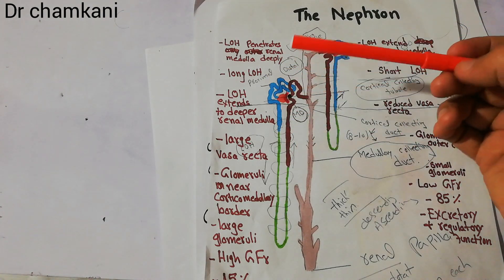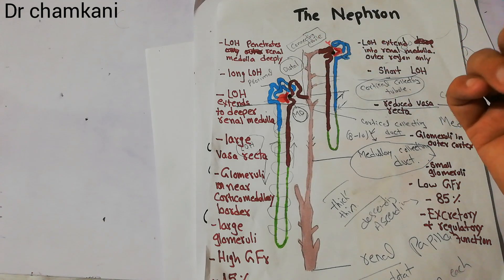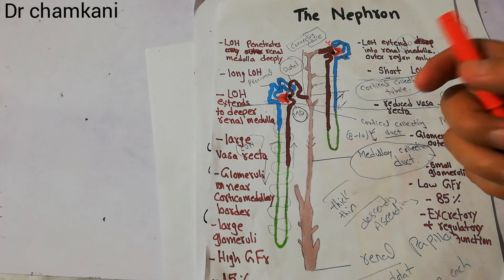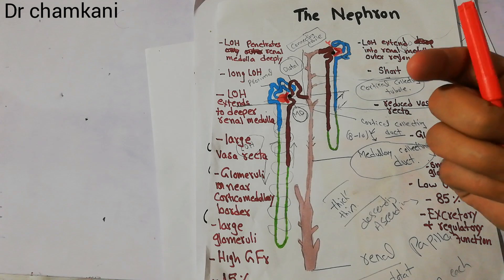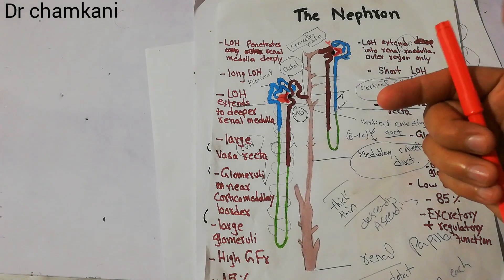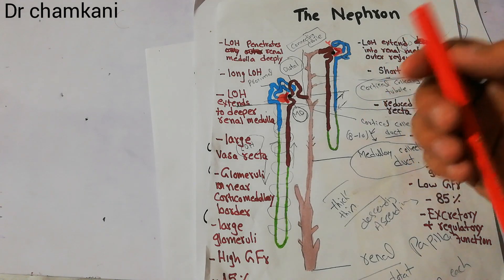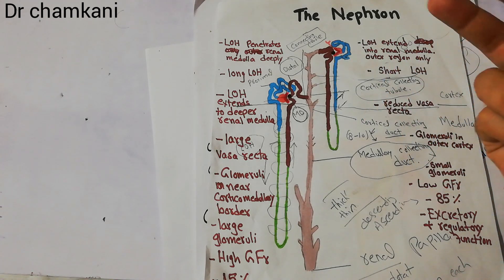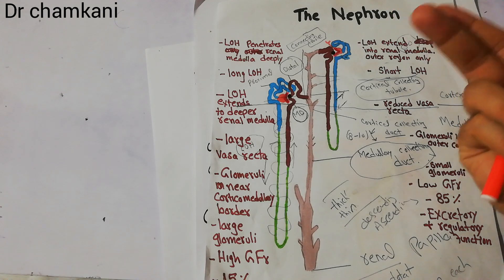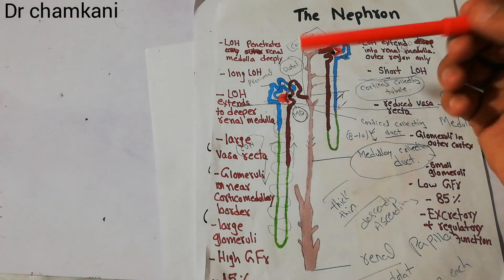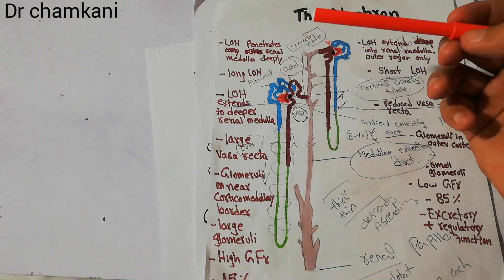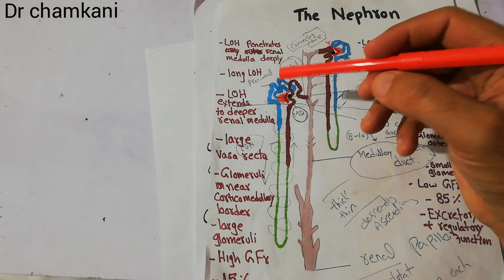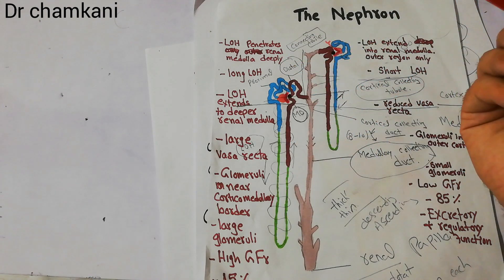So far we have been discussing the filtration process and reabsorption process, and we have discussed in detail the different methods for reabsorption — the active methods and the passive methods through which sodium, chloride, urea, creatinine, potassium etc. are reabsorbed actively, passively, or not at all reabsorbed. Now we will discuss those reabsorption and secretion processes for different segments of the nephron.